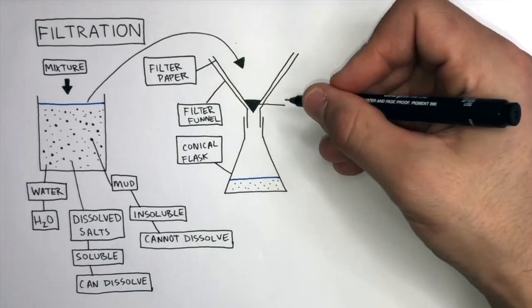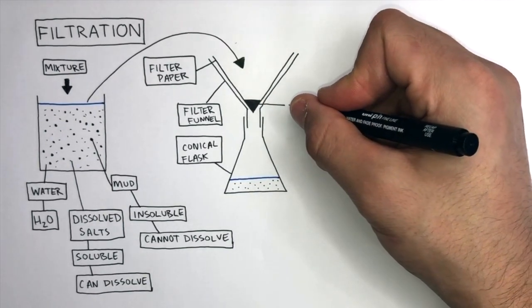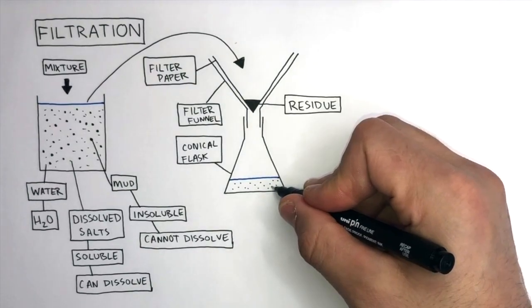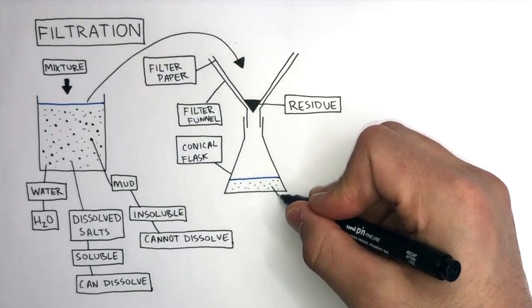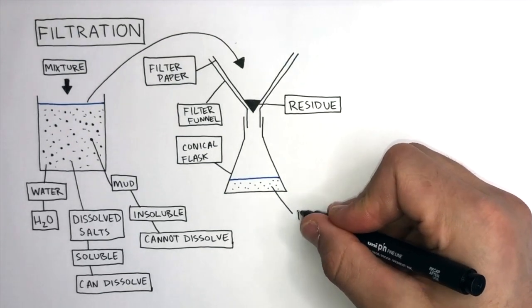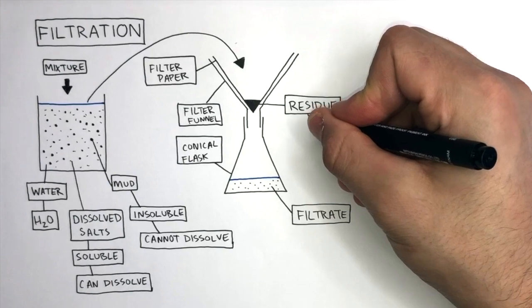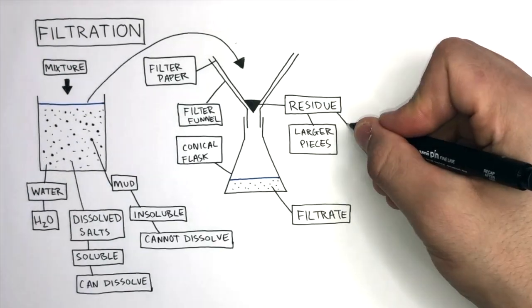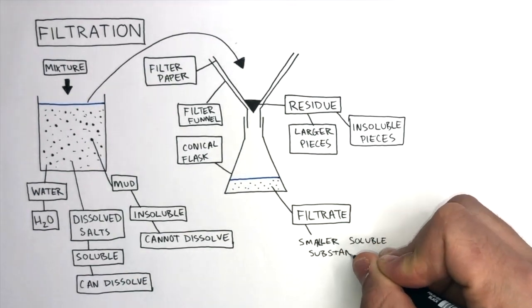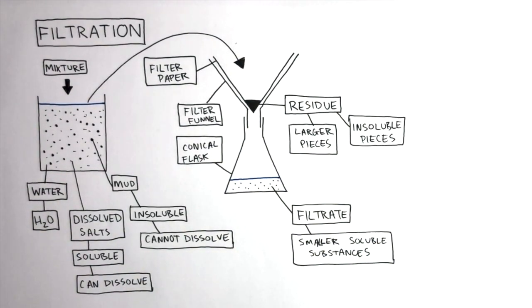The large insoluble substances trapped in the filter paper is known as the residue, whereas the water molecules and dissolved salts that pass through the pores and is collected in the conical flask at the bottom is known as the filtrate. The residue is made up of larger pieces which are insoluble, and the filtrates contain smaller soluble substances which are dissolved in the water.